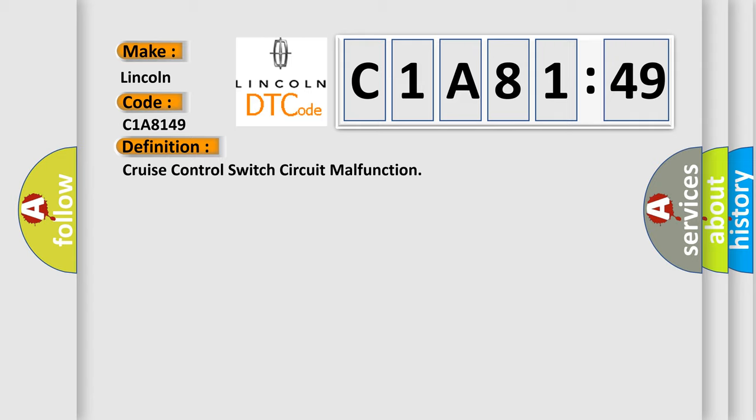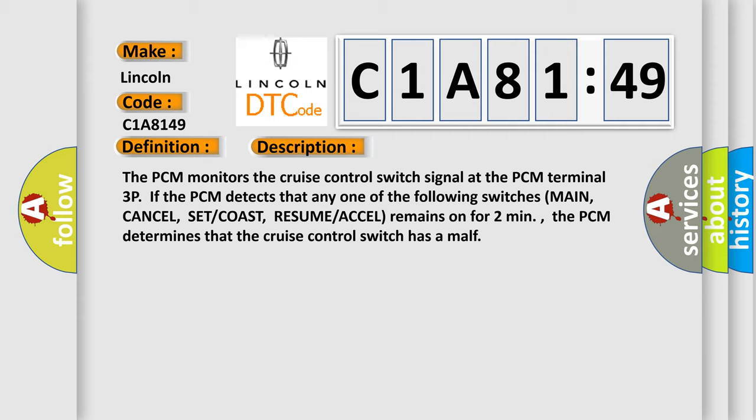And now this is a short description of this DTC code. The PCM monitors the cruise control switch signal at the PCM terminal 3P. If the PCM detects that any one of the following switches—main, cancel, set, coast, resume, accel—remains on for two minutes, the PCM determines that the cruise control switch has a malfunction.